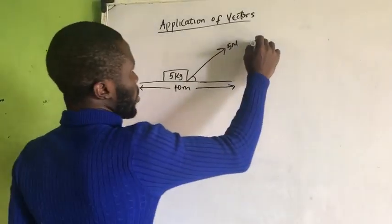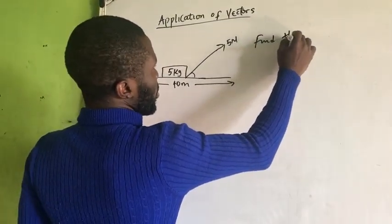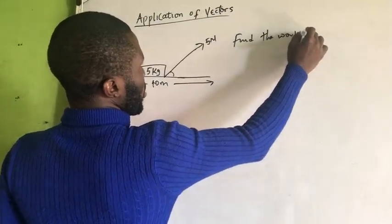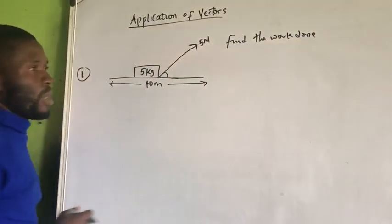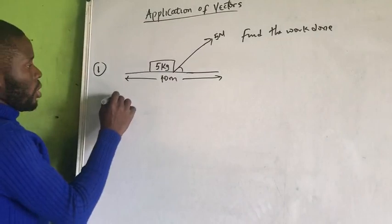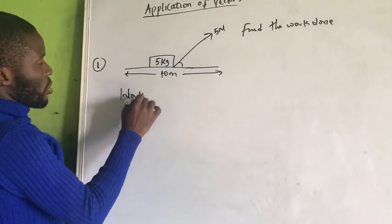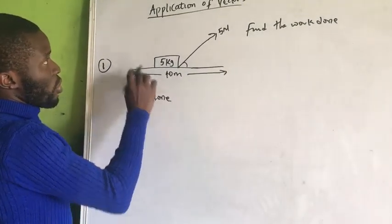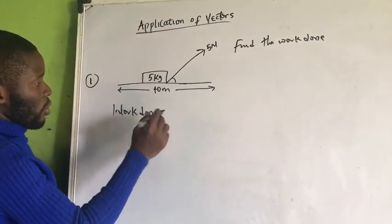Now, what is the work done? Find the work done. In this kind of question, how are we going to find the work done? Work done, actually. Of course, we are still going to talk about work done. But we just want to use this example as an application of vectors.